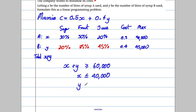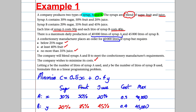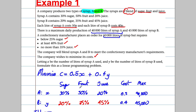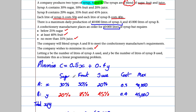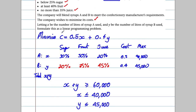We also know y ≤ 45,000, the maximum for syrup B. So the total must be at least 60,000, but individually syrup A must be less than 40,000 and syrup B less than 45,000. Now we need to think about the 25% sugar requirement.